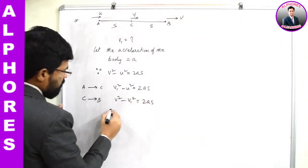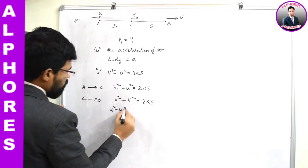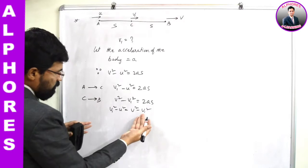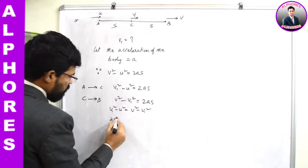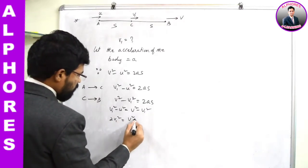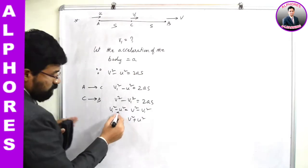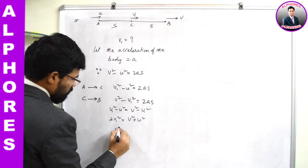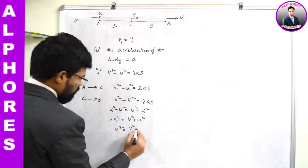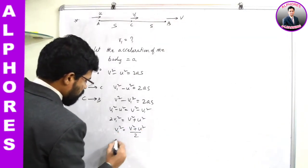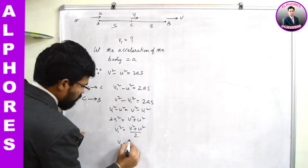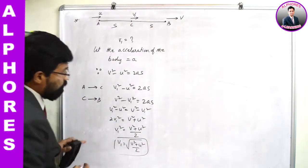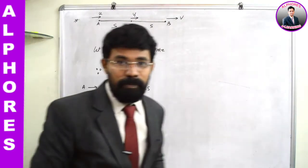Since the right-hand sides are equal, we can equate these two equations: v1² - u² = v² - v1². Bringing -v1² to the left-hand side gives 2v1² = v² + u², and therefore v1² = (v² + u²)/2. So v1 can be written as √((v² + u²)/2).